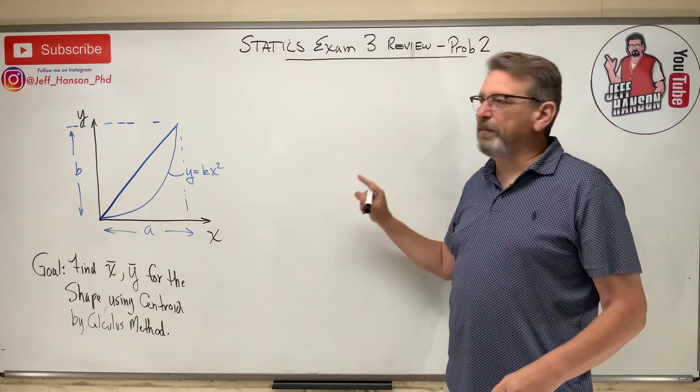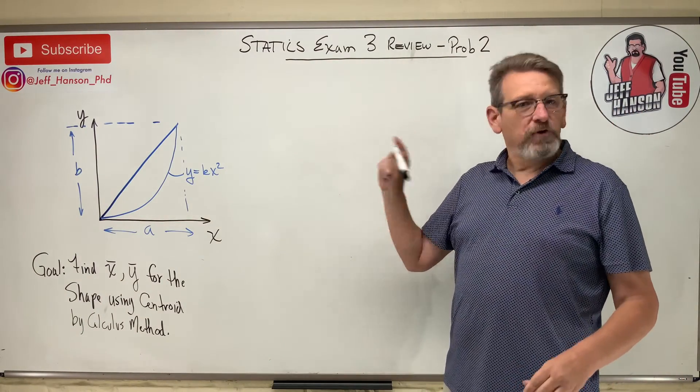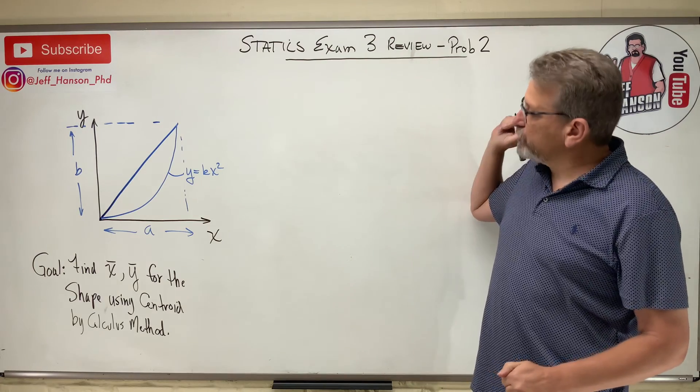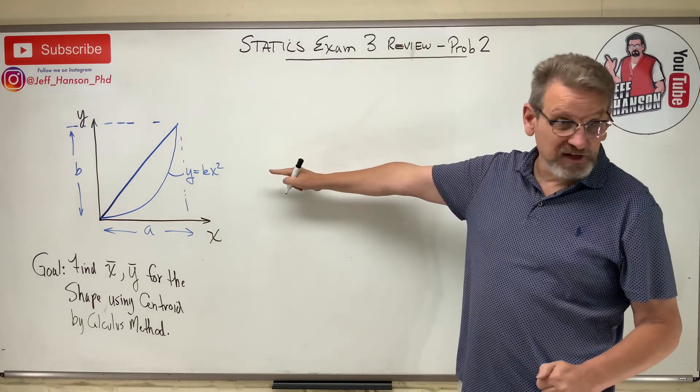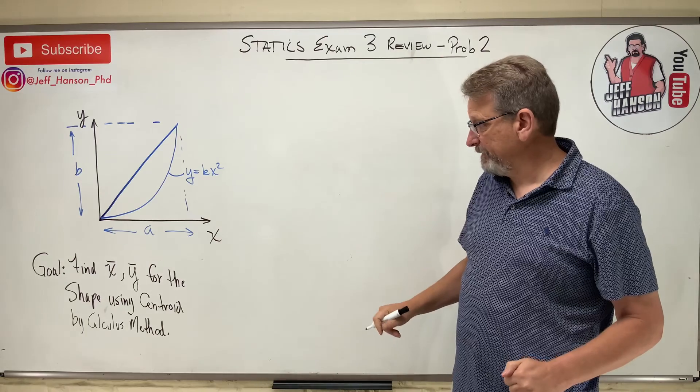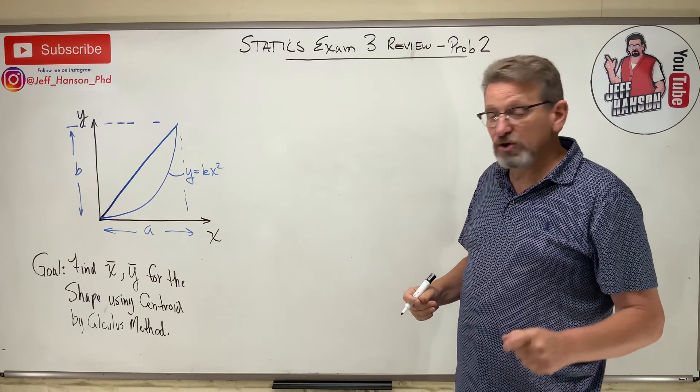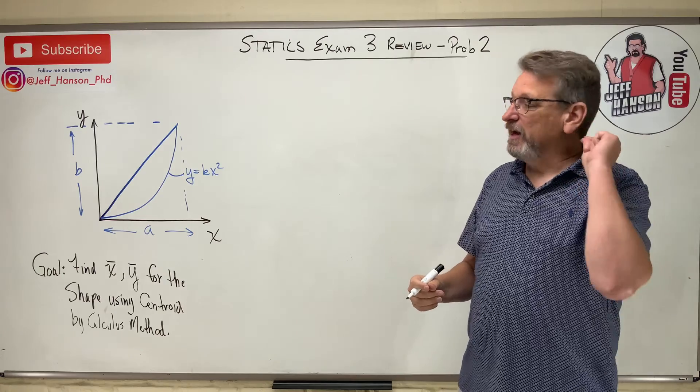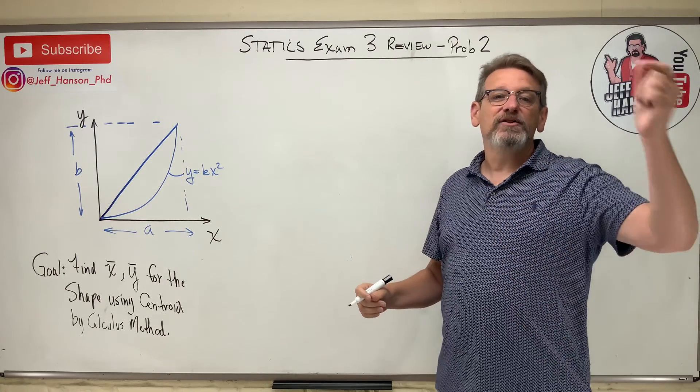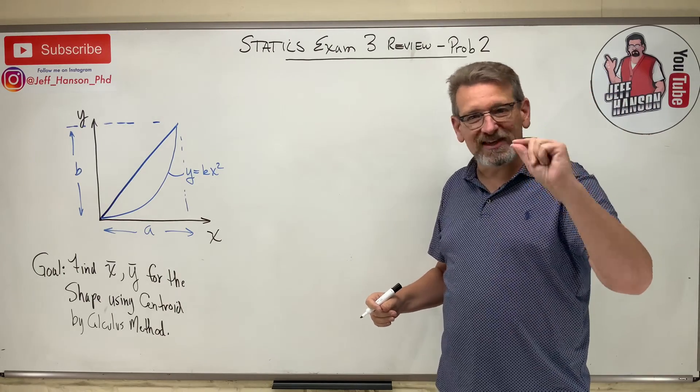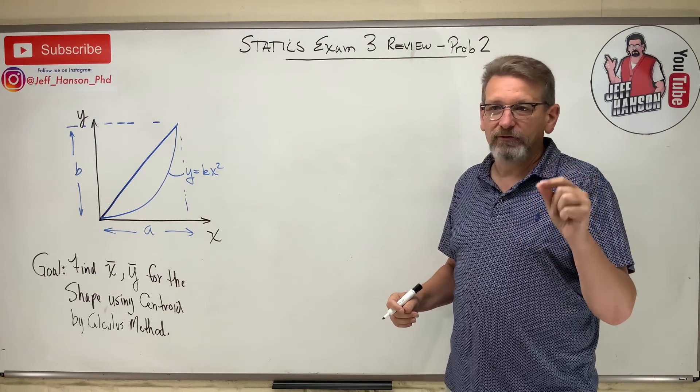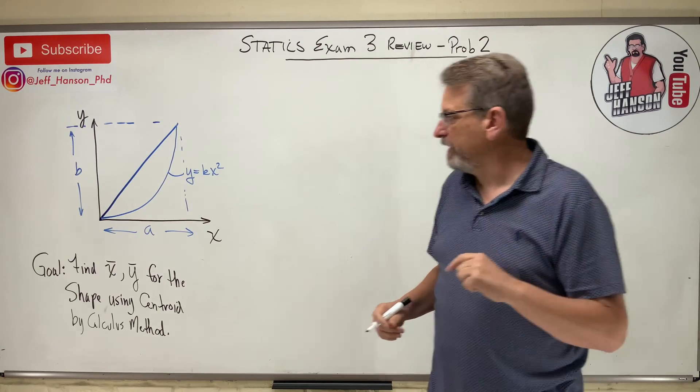Hey gang, here's our next exam 3 review problem. Let's talk about problem number two. It looks like centroids by calculus. They asked us to find X bar and Y bar for the given shape using the calculus method. Now if we ask you to use the calculus method, surprisingly we expect you to use the calculus method and not the look it up in the back of the book method.